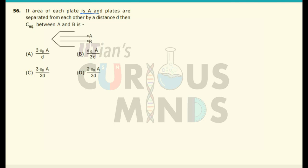If the area of each plate is A and the plates are separated by a distance D, then the equivalent capacitance C is equal to — now, there are 4 plates: this is plate 1, this is plate 2, 3, and 4.